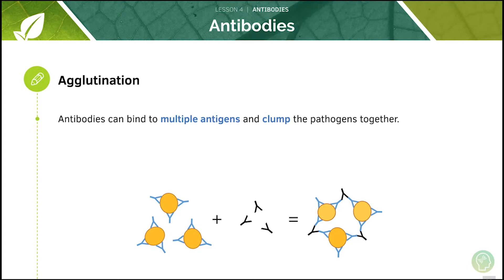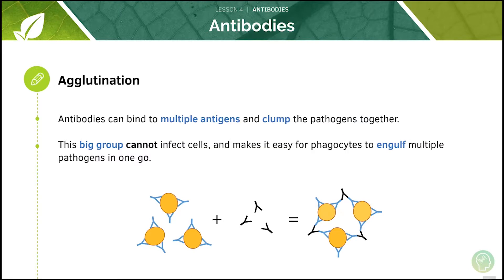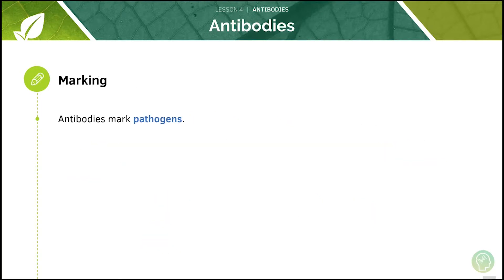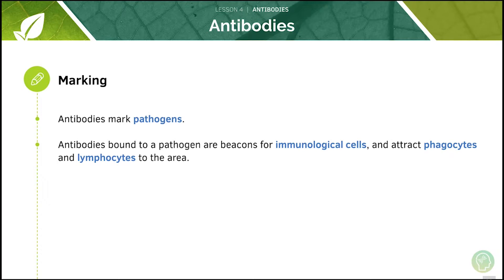Antibodies can also bind to multiple antigens and clump the pathogens together. This big group is unable to infect cells, and it also makes it easy for phagocytes to engulf multiple pathogens in one go. Antibodies can also mark out pathogens — antibodies bound to a pathogen are beacons for immunological cells and attract phagocytes and lymphocytes to the area.